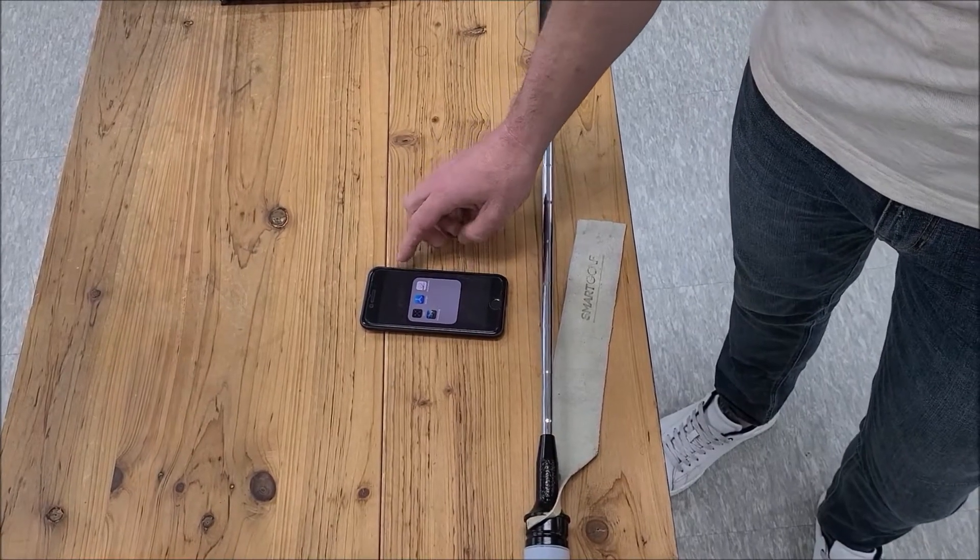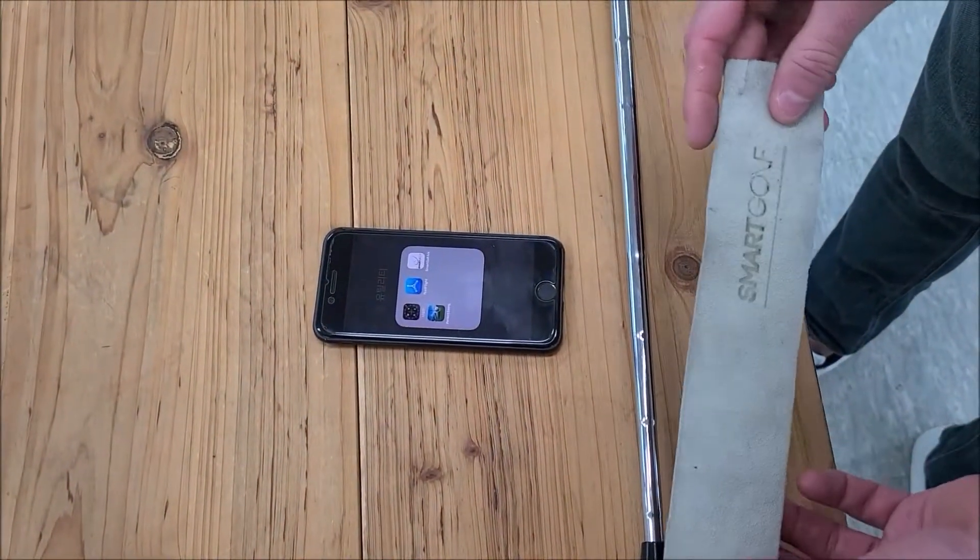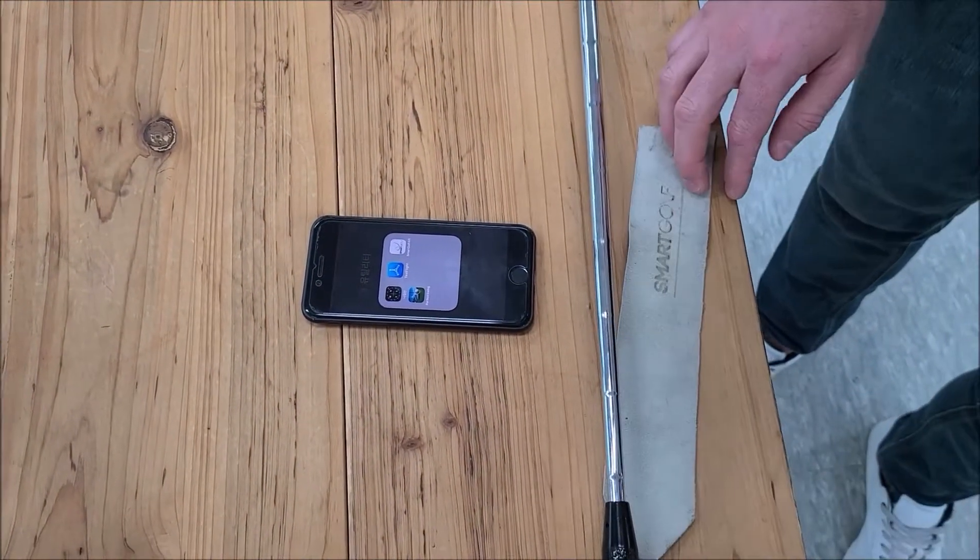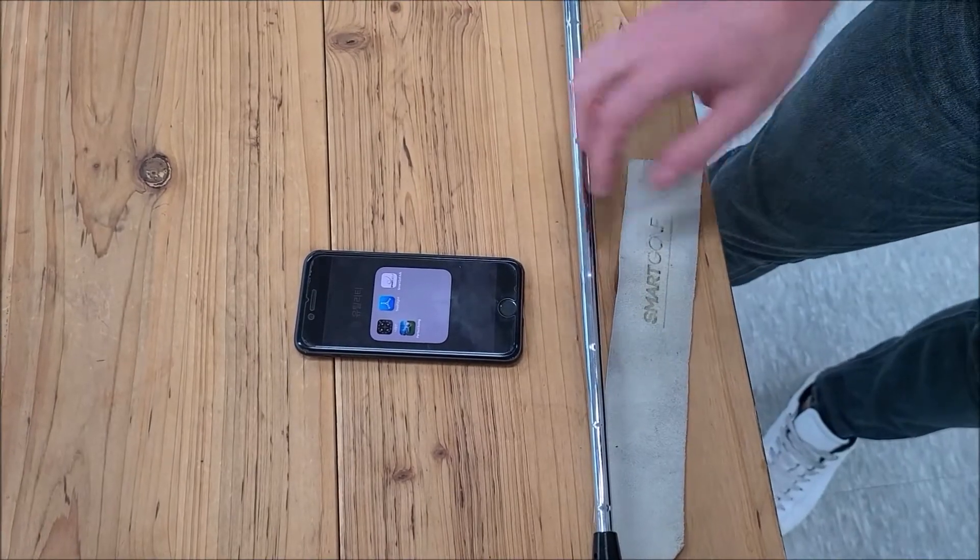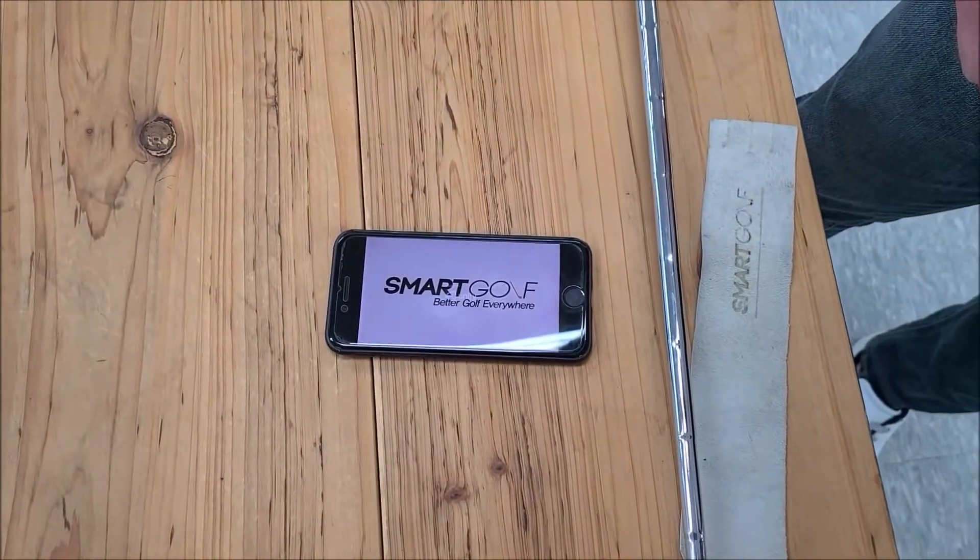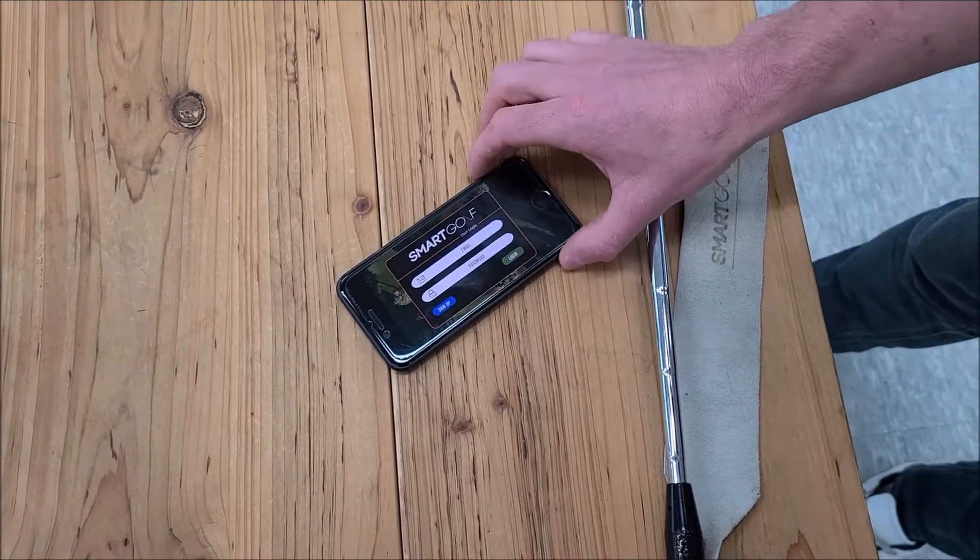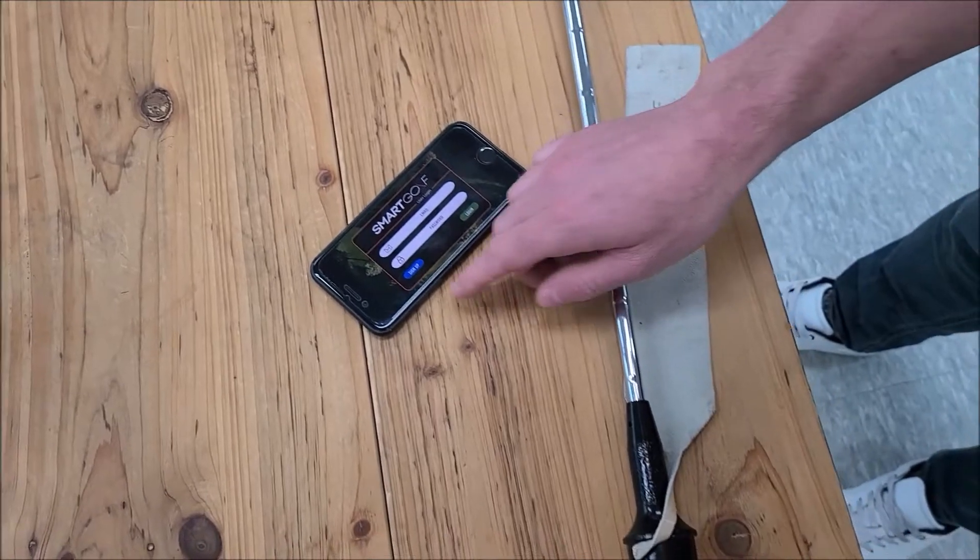Here we have our smartphone device and we're going to connect it to our physical product using Bluetooth. The first thing we need to do is go into our Smart Golf app which we downloaded from the App Store. Since this is our first time, we need to sign up.